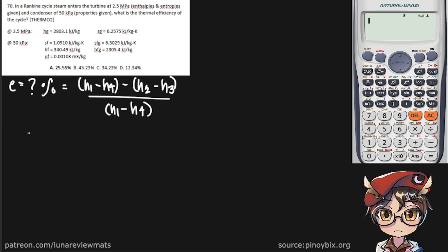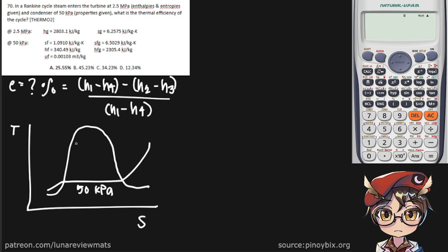So let us now draw our TS diagram for our simple Rankine cycle. At the bottom here, we have our pressure line of 50 kPa. And at the top, we have our pressure line of 2,500 kPa.